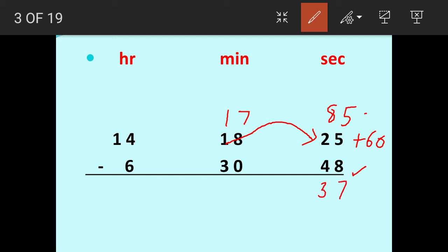Further we have to subtract 30 minutes from this 17 minutes. Now 17 is smaller than 30, so we go to the hours to borrow. So 14 will give 1 hour to this 17 and it becomes 13. Now that 1 hour when it comes to 17, that becomes 17 plus 60.